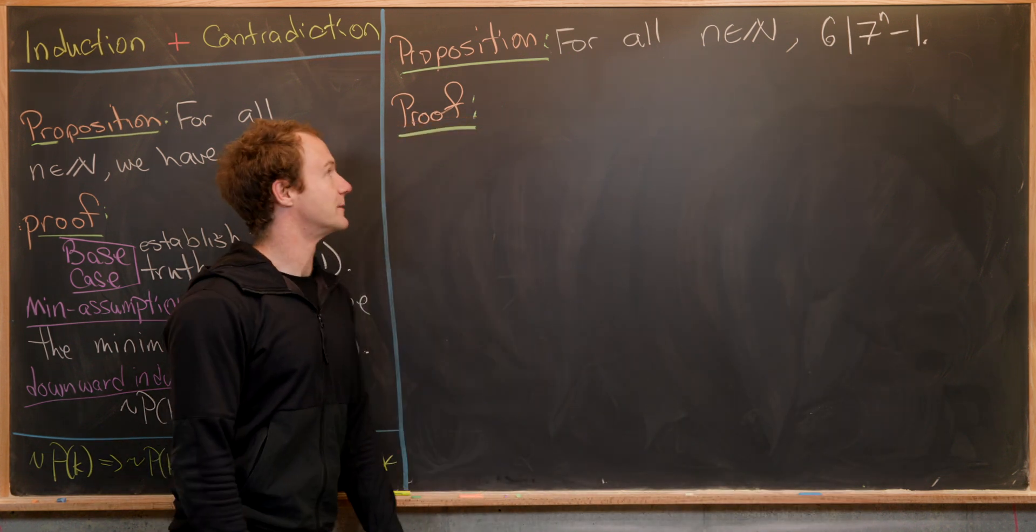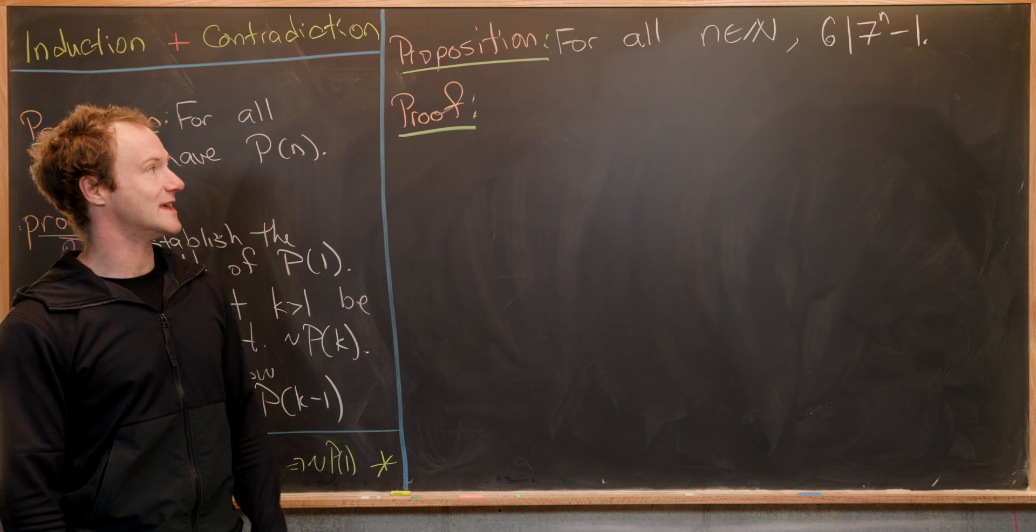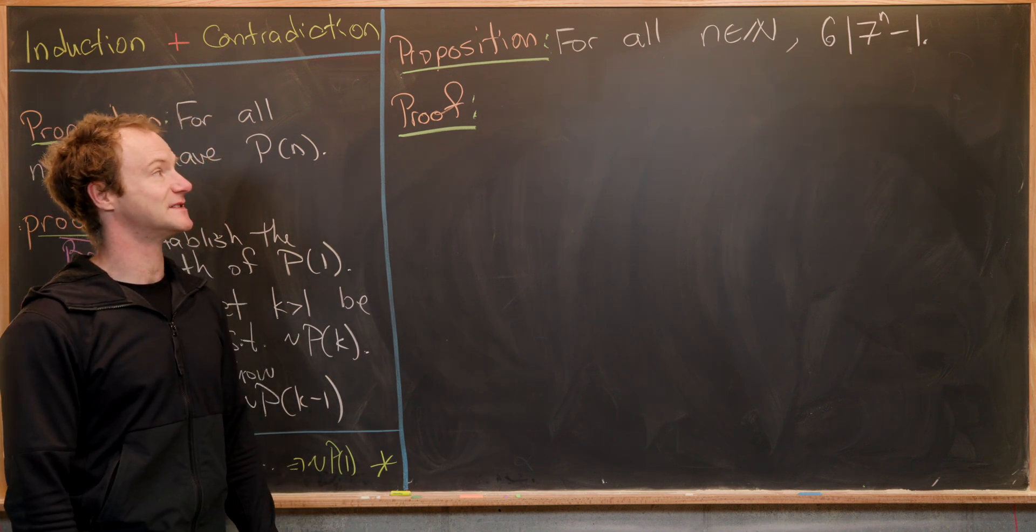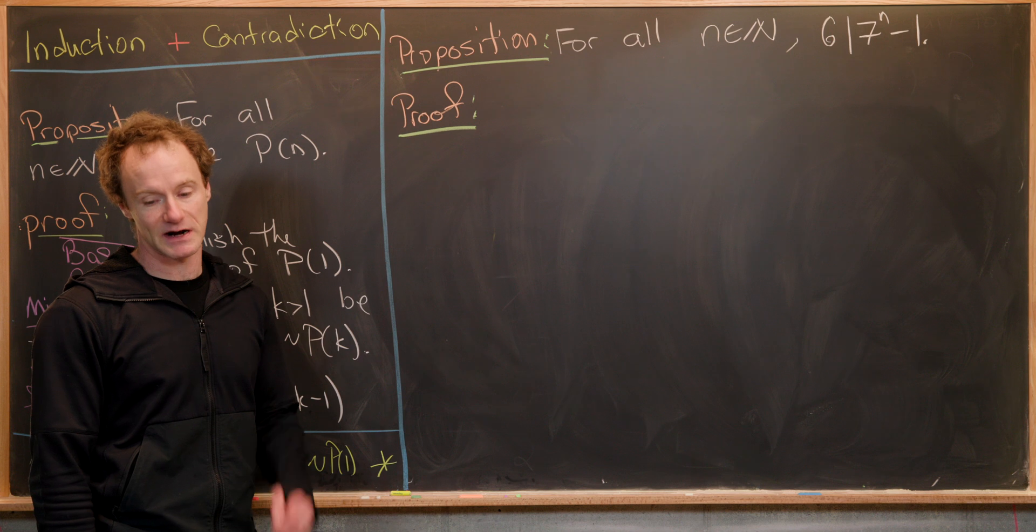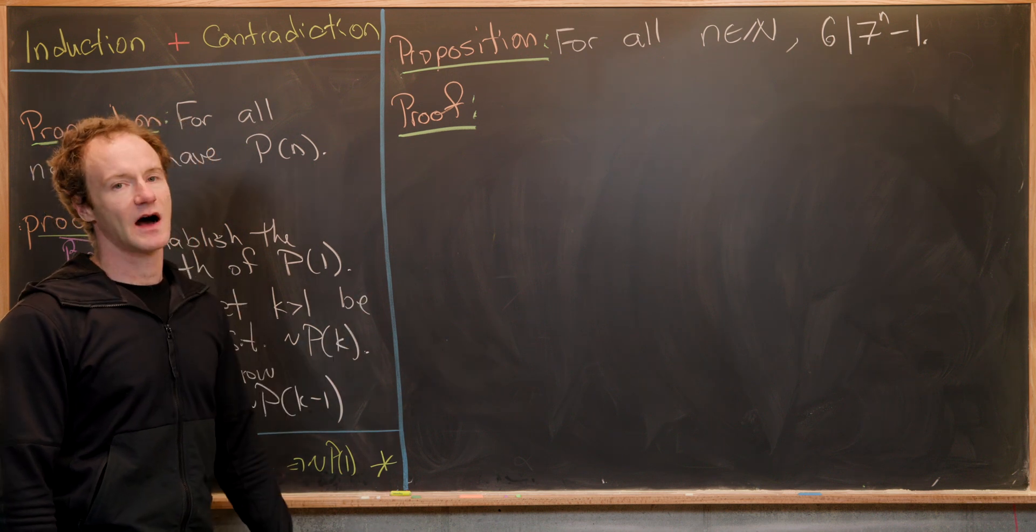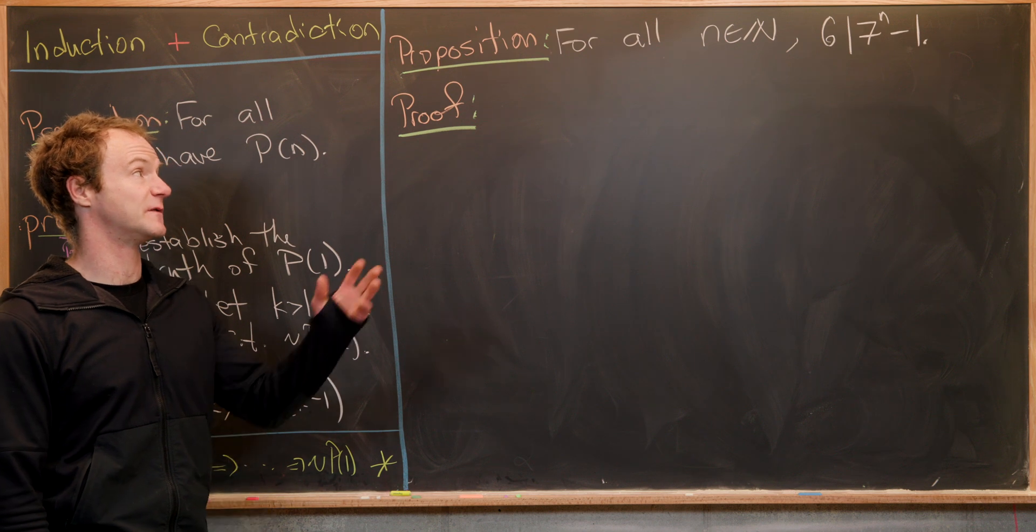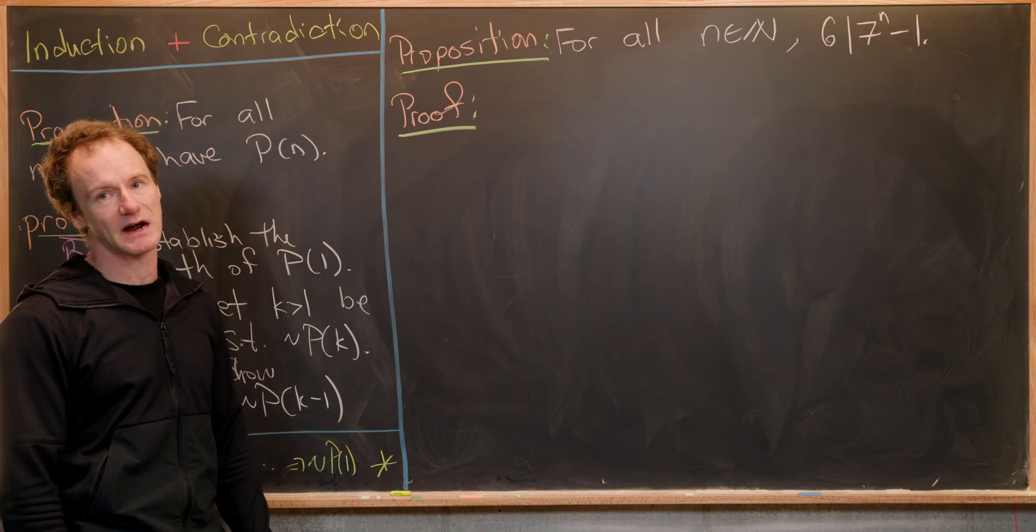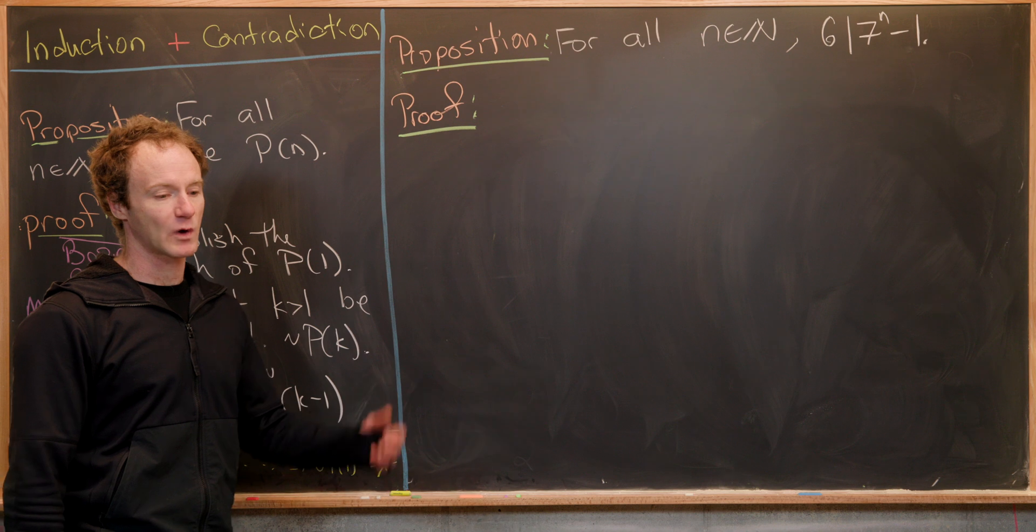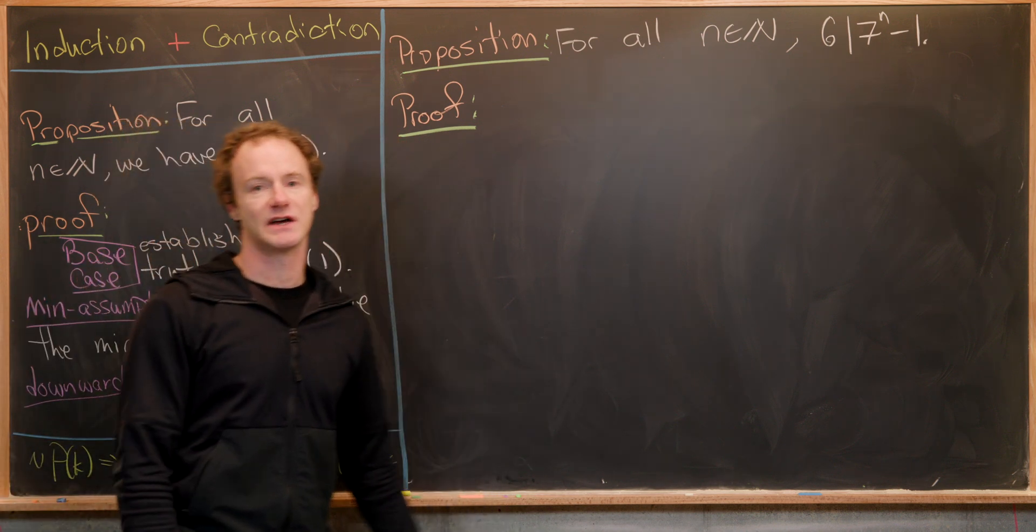Let's jump into our example. We want to show for all natural numbers n, six divides seven to the n minus one. You could do this with regular induction or with factoring of seven to the n minus one, but we're going to practice this method of induction.